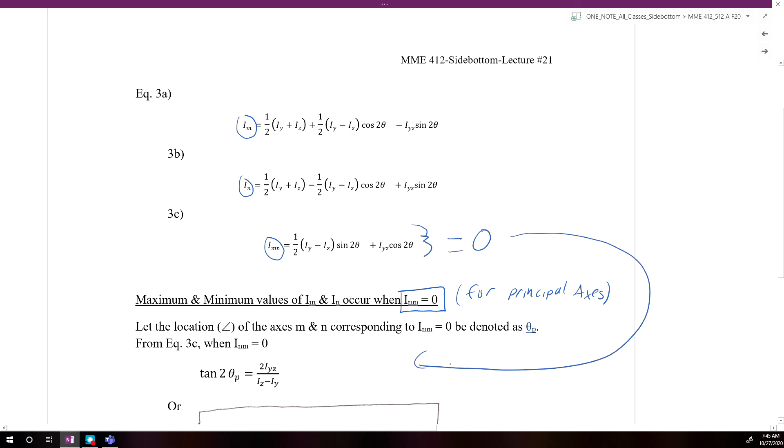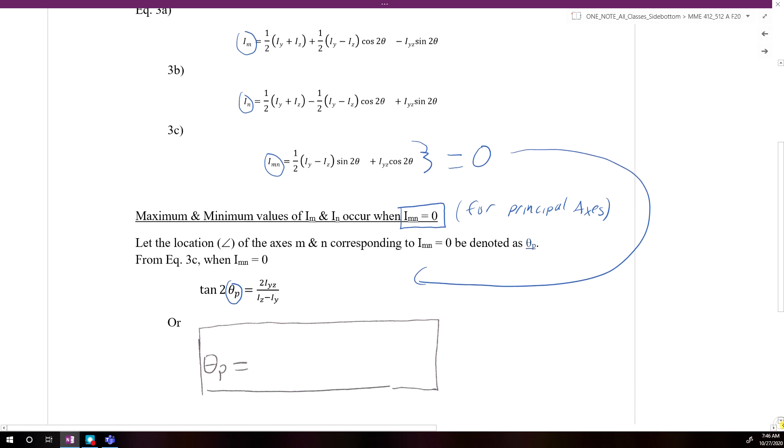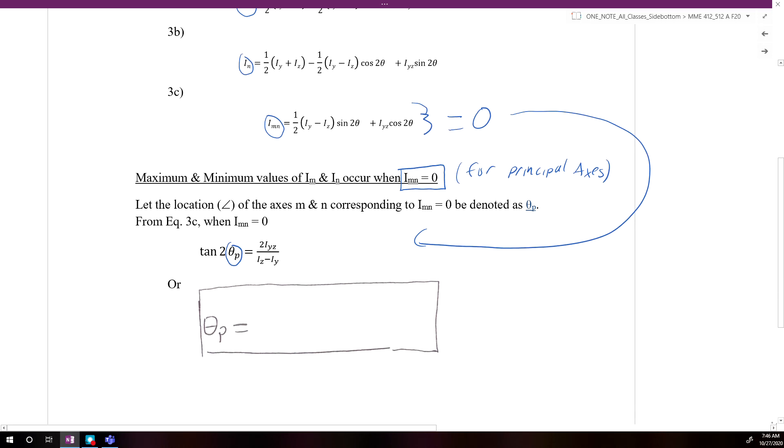We can solve for the angle. We're interested in finding what is the angle theta P. If we rearrange this equation here, we'll end up getting theta P is going to be equal to one-half times the inverse tangent of 2IYZ over IZ minus IY.